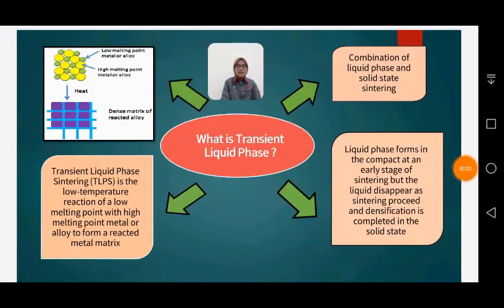My name is Nurdiana Amira binti Muhammad Kamil. So now I will explain the introduction - what is transient liquid phase? Transient liquid phase sintering is the low temperature reaction of a low melting point with high melting point metal or alloy to form a reacted metal matrix. As we can see, there is a picture of low melting point metal or alloy and high melting point metal or alloy.